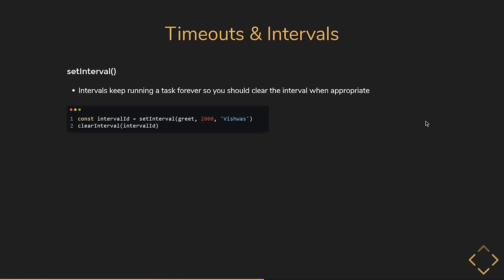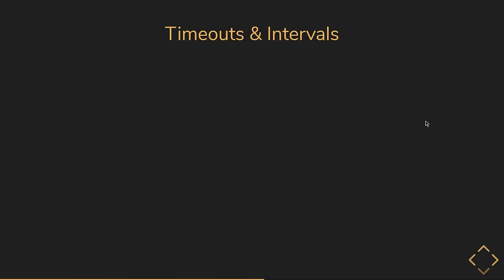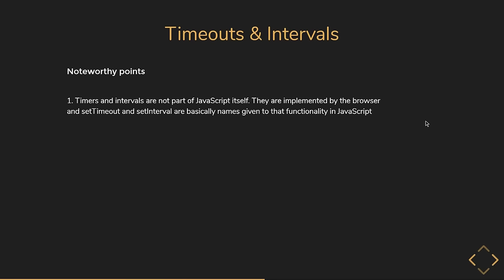A few more points to highlight. First, timers and intervals are not part of JavaScript itself — they are implemented by the browser, and setTimeout and setInterval are names given to that browser functionality in JavaScript. Node also provides this. Second, the duration parameter is the minimum delay, not a guaranteed delay. If we call setTimeout with two seconds, two seconds is the minimum time after which the function will execute — it could in fact take five seconds if the call stack is busy.